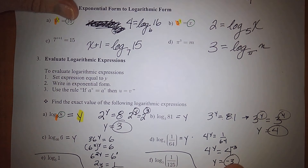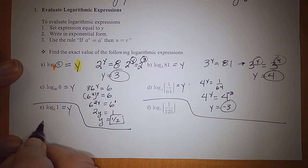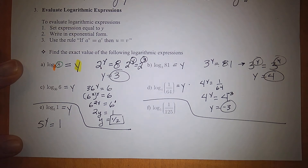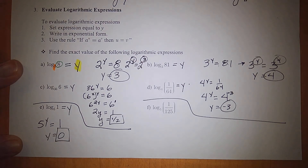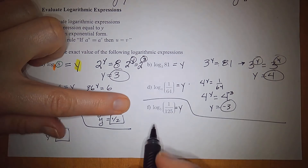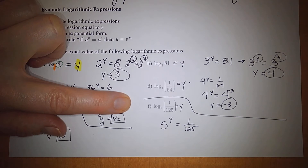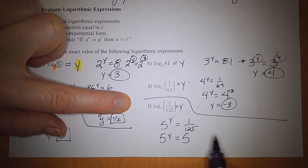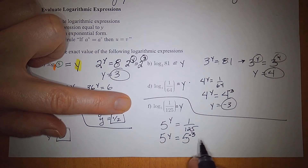For part E: 5 to the y equals 1. Anything raised to the 0 power is 1, so y equals 0. For the next: 5 to the y equals 1/125. Since 5 to the 3rd is 125, to get 1/125 we use 5 to the negative 3rd, so y equals negative 3.